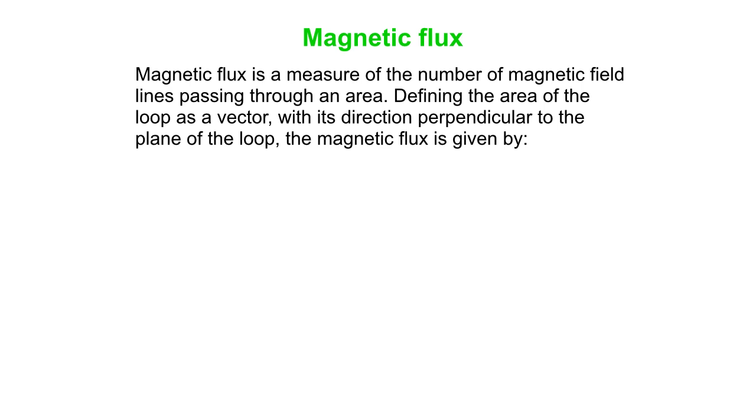So we define the area of the loop as a vector. Its magnitude, of course, is the usual pi r squared or length times width. But the direction of the area vector is perpendicular to the plane of the loop. And when you do that, you can express the magnetic flux like so.